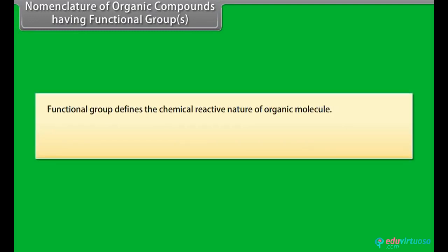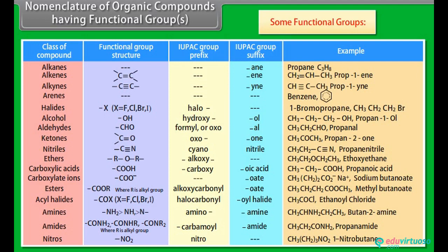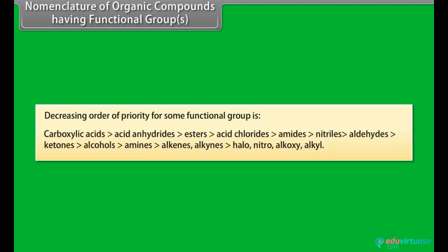Nomenclature of organic compounds having a functional group: the functional group defines the chemical reactive nature of an organic molecule. In polyfunctional compounds, one functional group is chosen as the principal functional group and the remaining are treated as substituents with appropriate prefixes. Some functional groups are given in the table below. The decreasing order of priority for some functional groups is as follows.